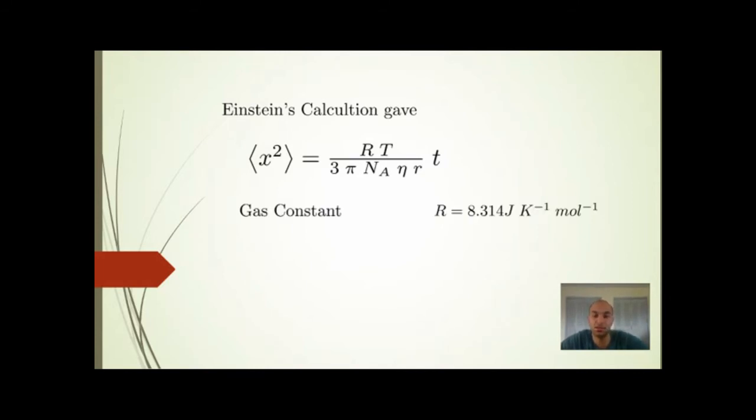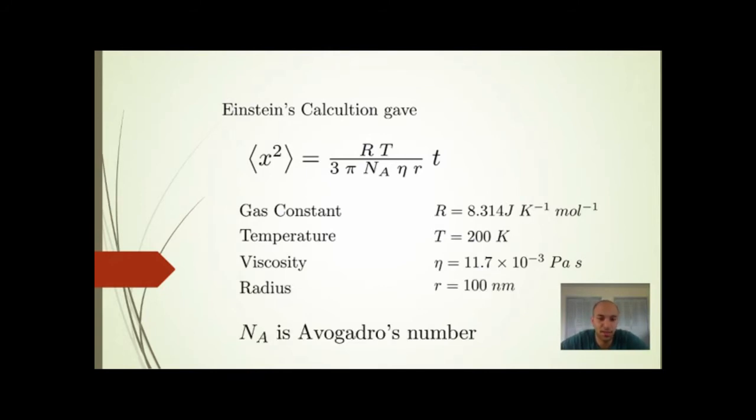R here is the gas constant—you can measure it in the ideal gas law—and T is the temperature. We did it at 200 Kelvin. And η is the viscosity. If you don't know those units, that's fine. And r is the radius.